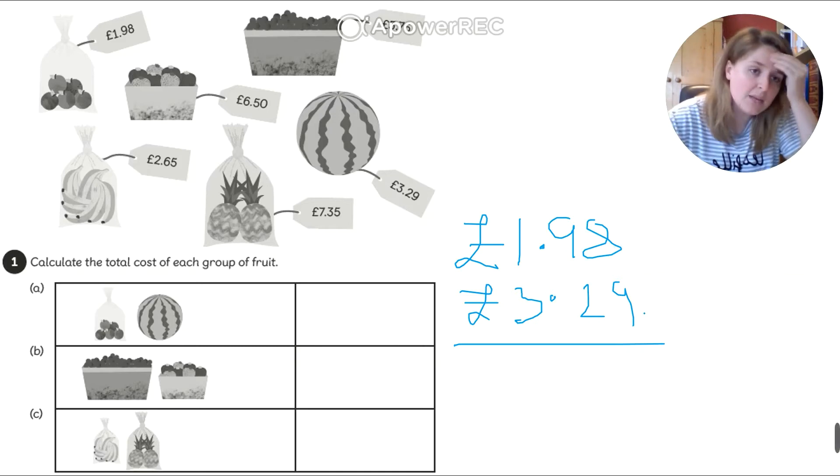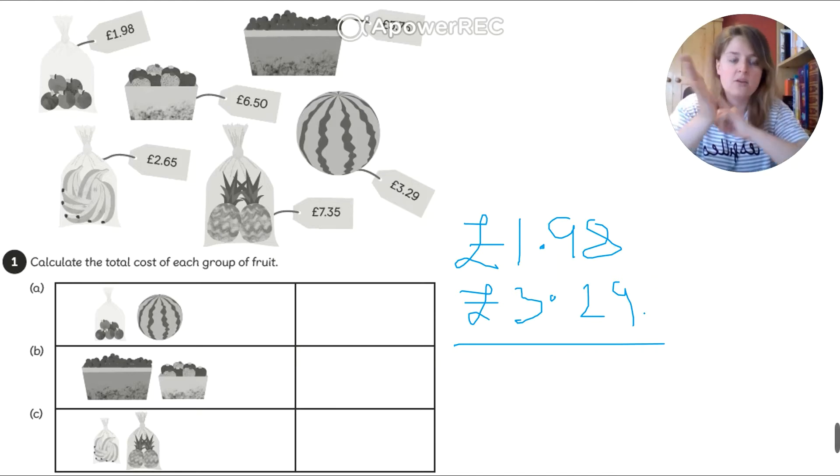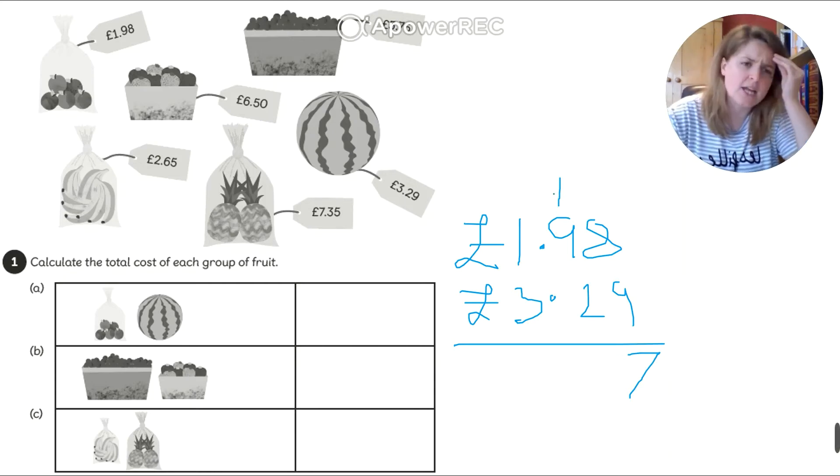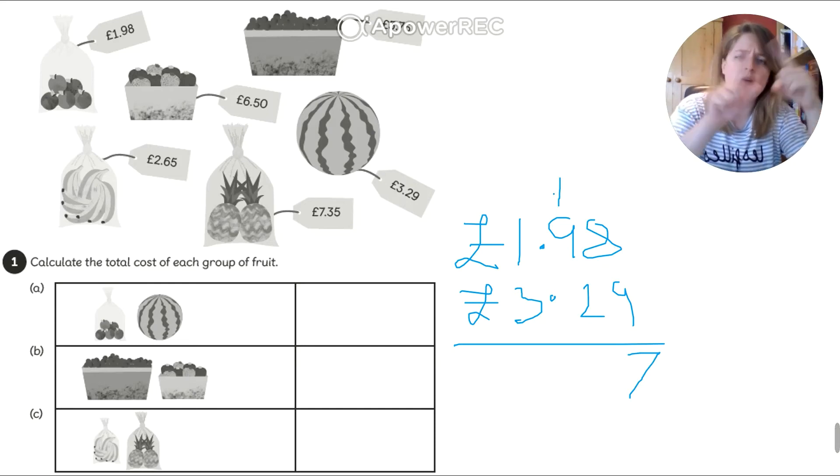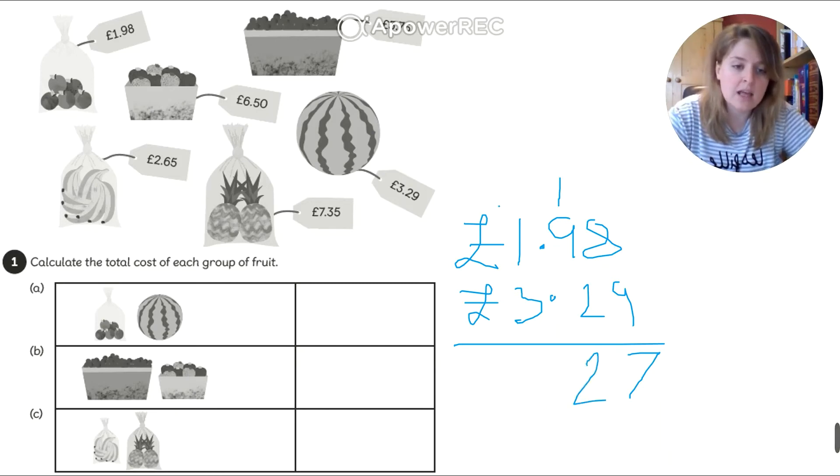So I need to add these together. 8 and 9. So in my head. I'm going to go with 9 because it's the bigger number in my head. 9, 10, 11, 12, 13, 14, 15, 16, 17. 17 is my answer. So my 7 goes here. My 1 goes up here because I carry it over. And now I need to add 9 and 2 and 1. So 9 in my head. Add 1 is 10. Add 2 is 11. 12. 12. 12.